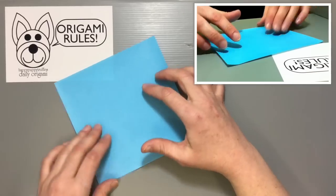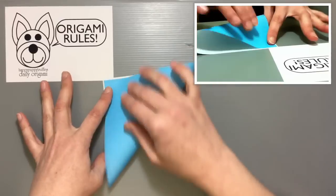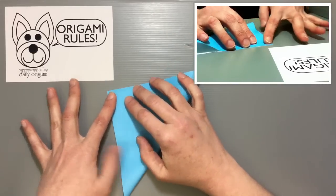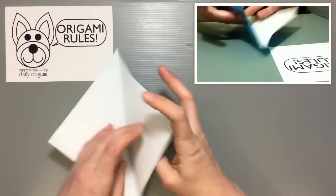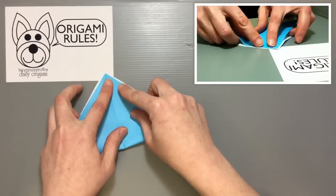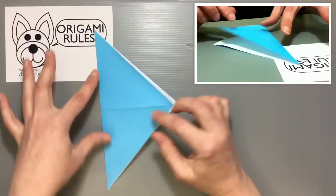Starting with the color side facing down, I'm going to fold my paper in half diagonally into a big triangle. Open it up and fold it in half again. This will give us the creases that we need to make sure we know where the center of everything is.